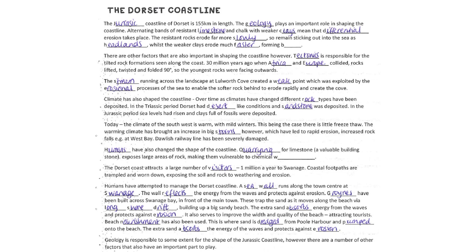There are lots of factors important in shaping the Dorset coastline. One really important thing to remember: if it asks you about a coastline you have studied, do not talk about just one specific landform. Swanage Bay or Old Harry and his wives is not a landscape — that's a coastal landform. If it's asking about the landscape or a coastline, you need to talk about several different landforms, so you could talk about Swanage Bay and Old Harry and his wives together.